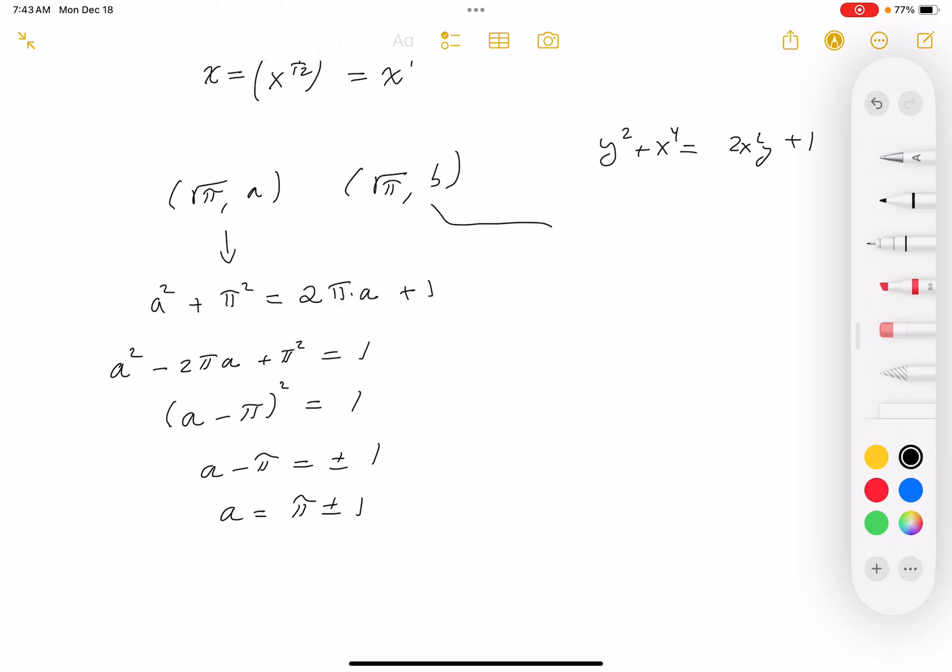Let's do the next one. I'm expecting to see something very similar to this one. So I get b² plus π² equals 2πb plus 1. Really I'm expecting the same thing.